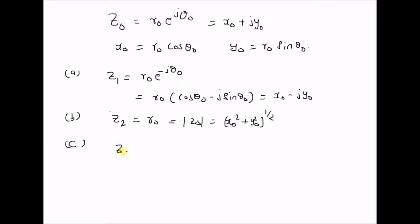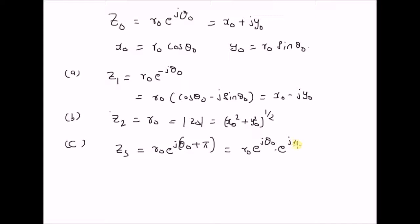The next one is z3 is equal to r naught multiplied by e power j theta naught plus pi. That is a phase shift of pi, which can be written as r naught e power j theta naught multiplied by e power j pi. But we know that e power j pi is equal to minus 1. So this is equal to minus r naught into e power j theta naught, which is equal to minus of x naught plus j y naught.